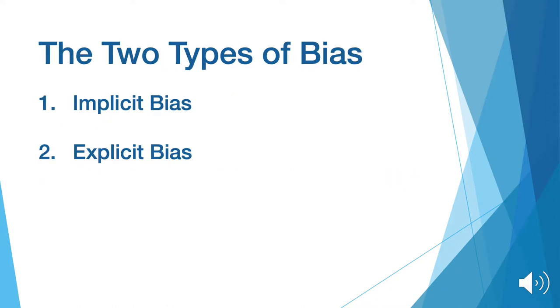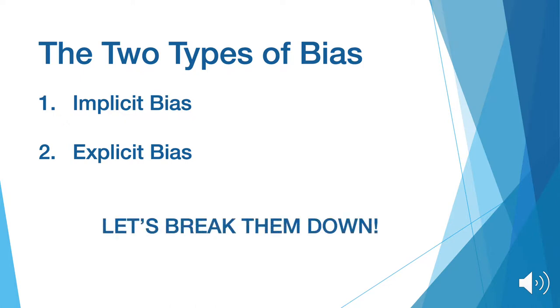But there are actually two distinct types of bias. The two types of bias include implicit bias and explicit bias. Let's break each of them down.